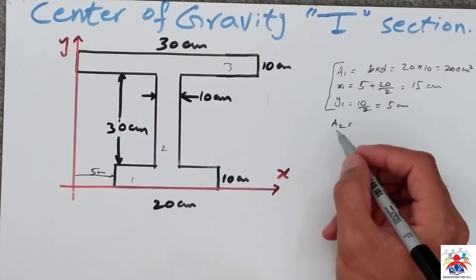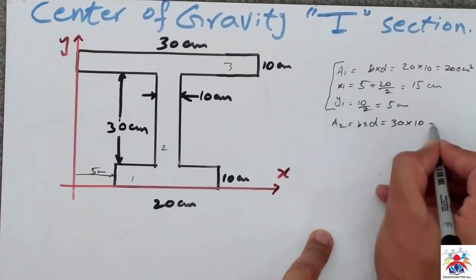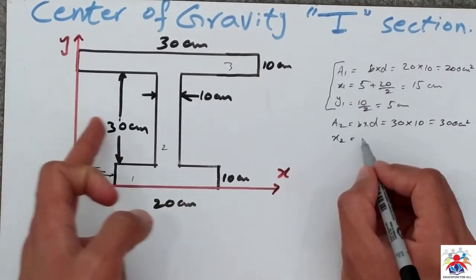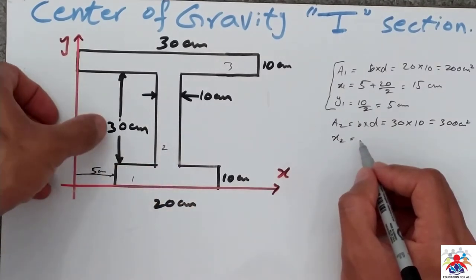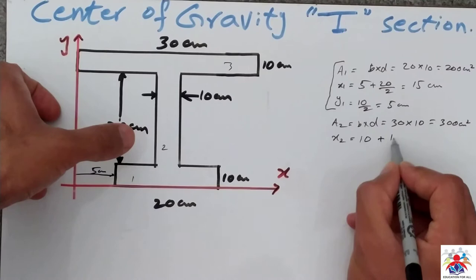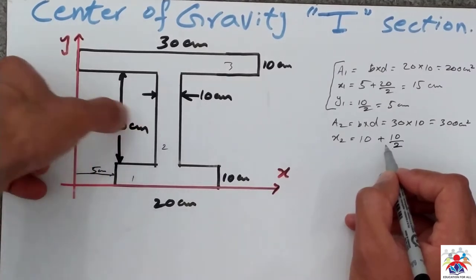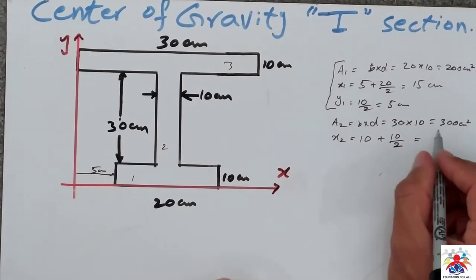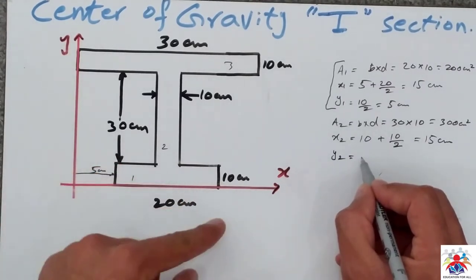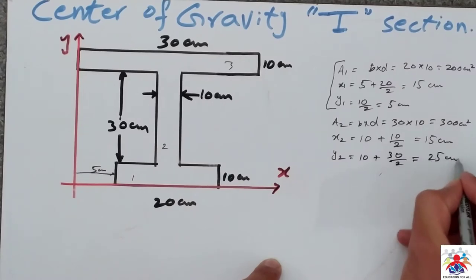Now area two is b multiplied by d, which is 30 multiplied by 10, equal to 300 square centimeters. x2 is from the reference to the middle of the section: 10 plus 10 divided by 2, giving 15 centimeters. y2 is measured from the bottom red line: 10 plus 30 divided by 2 equals 25 centimeters.